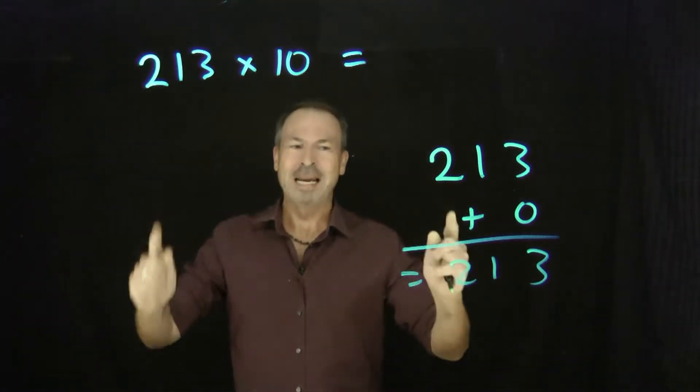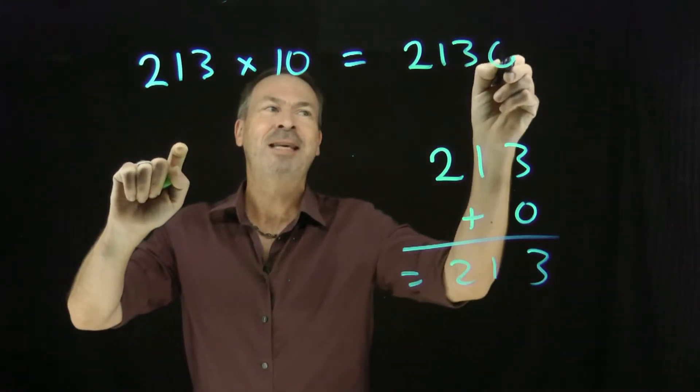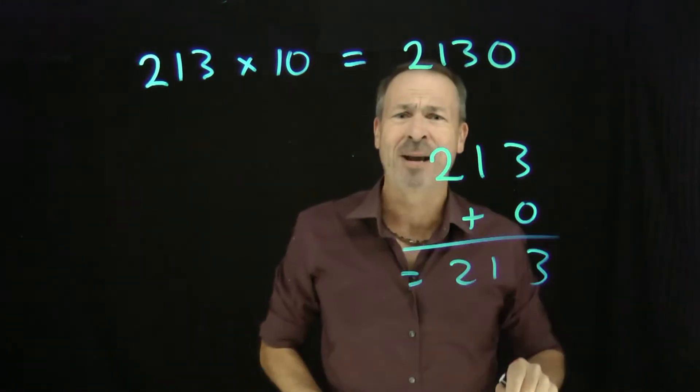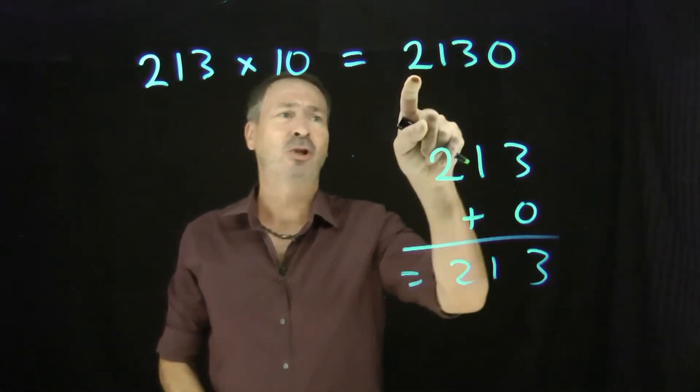And then I realized, oh, what people really meant, no, no, no. Just write the number again and add a zero to the end of it. Just tack on a zero at the very end. That's what they meant by add a zero. So apparently 213 times 10 is 2130.